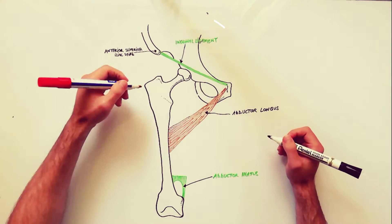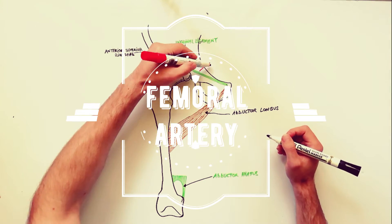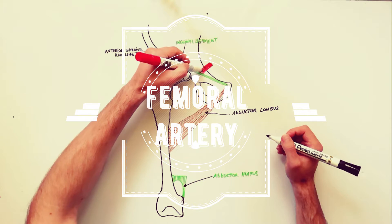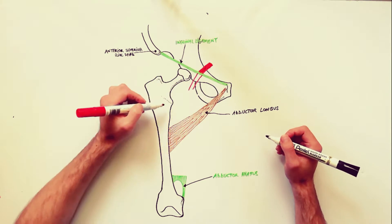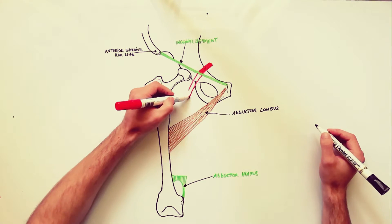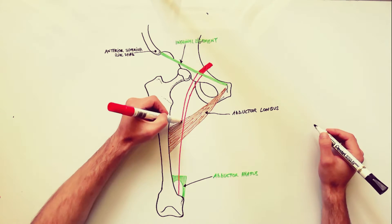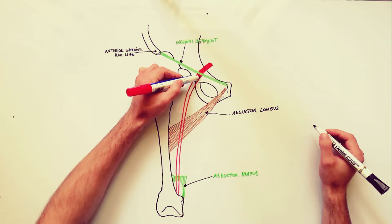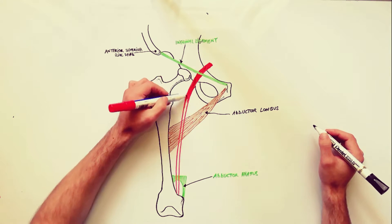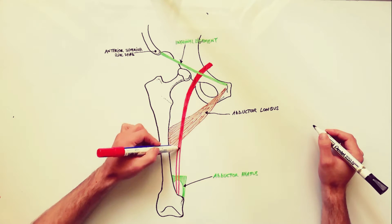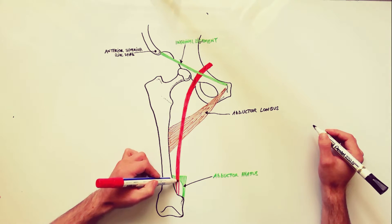Today we will discuss the femoral artery and its branches. The femoral artery is a large artery in the thigh and the main arterial supply to the leg. It enters the thigh from behind the inguinal ligament as a continuation of the external iliac artery.